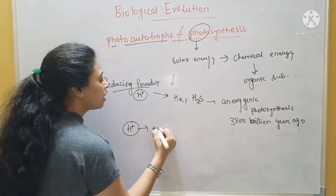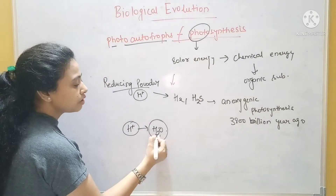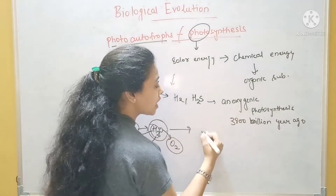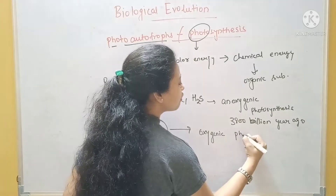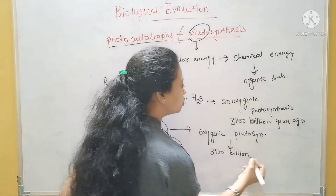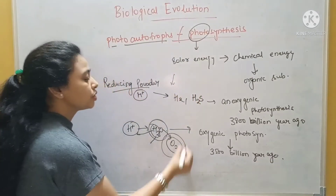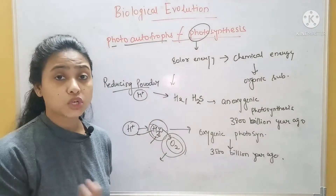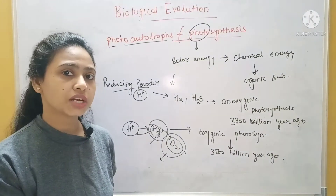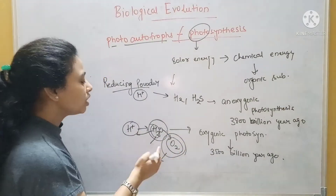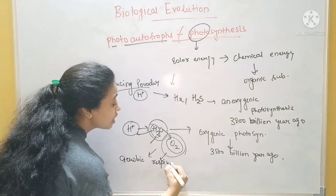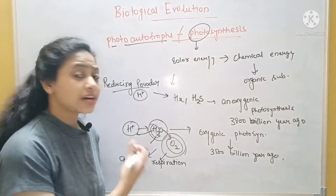But later on, hydrogen was taken from water. During the splitting of water, hydrogen is taken and oxygen is evolved. This process is called oxygenic photosynthesis, which evolved around 3.5 billion years ago. As oxygen evolved into the atmosphere, the atmosphere changed from reducing to oxygen-rich. Slowly all organisms switched to aerobic respiration, which was much better than anaerobic respiration because it produced more ATP molecules and more energy.